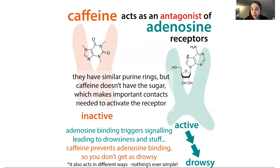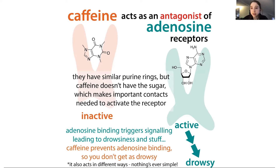Adenosine can also act as a chemical signaler — it can help send messages between cells. There are different adenosine receptors, a lot of them in your brain, and when adenosine binds, it activates the receptor, which leads to signaling that makes you drowsy.